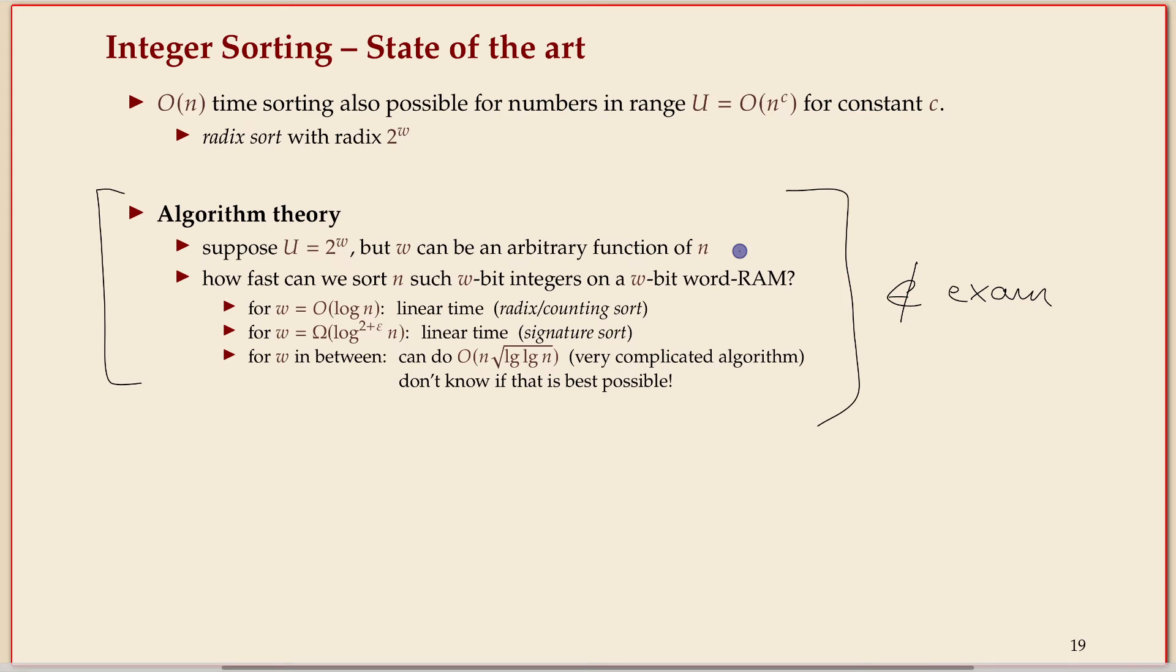Now, theoreticians were of course peaked by this discrepancy. So we can sort some lists of integers in linear time. In the general case for comparison-based we need n log n time. We can sort it in linear time if the integers are really small. So what happens in between, if the integers are slightly larger? What people looked at is suppose the universe is as big as what can fit in one word. But the word size can be some function of n. That's the standard word RAM assumption. Usually w is log n, but here we lift that. We say w can be any function of n.